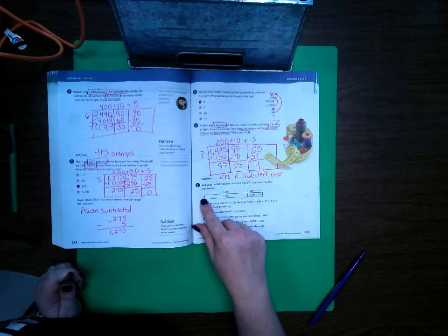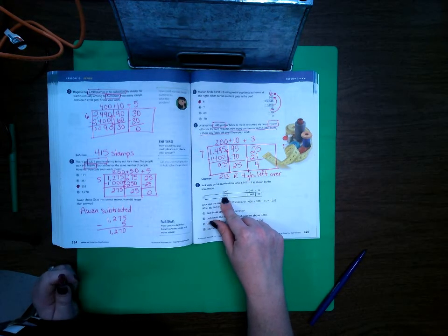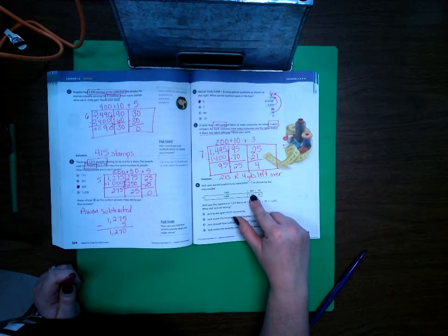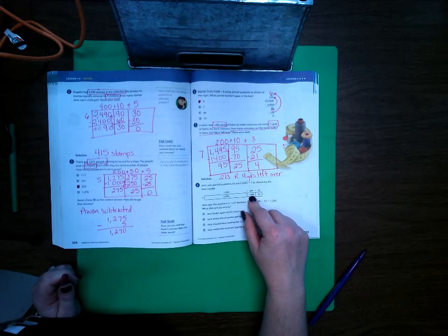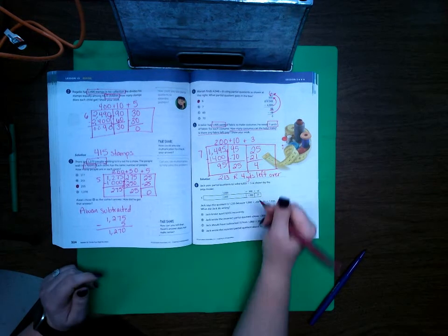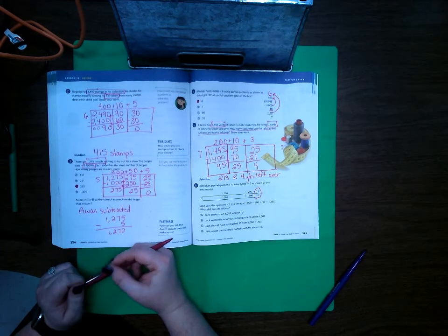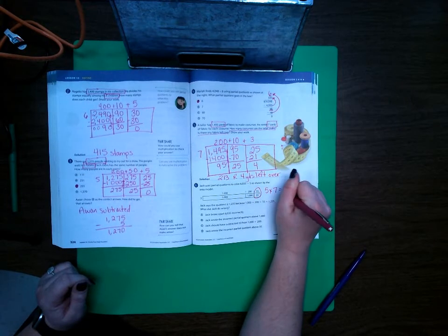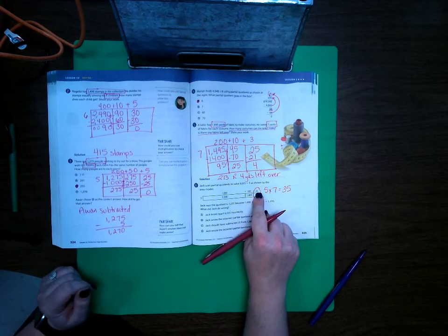5 times 1,000 is 5,000, which would leave 1,035. 5 times 200 is 1,000. 5 times 35 is 35? What in the world? Well, there's no way 5 times 35 is 35. 5 times 7 is 35. So he should have put a 7 up here instead of putting the 35.